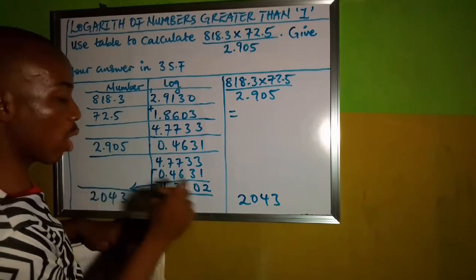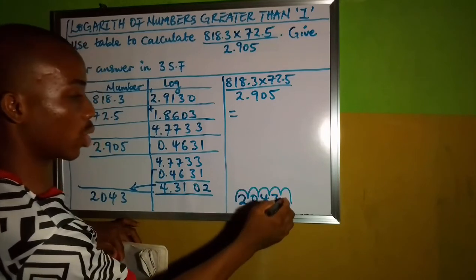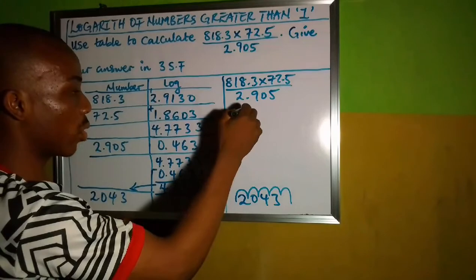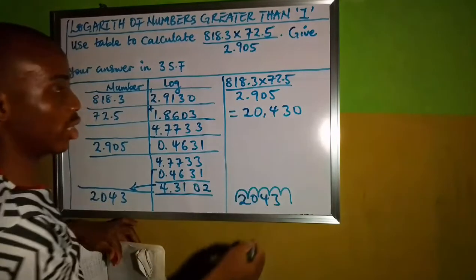So that then means that we are going to move in 5 places from the front of this answer we got as antilogarithm. We are having 2,043. We are going to move 5 places: 1, 2, 3, 4, 5. So there will be 0 here. So I will be having 20,430. This is what I will be having.